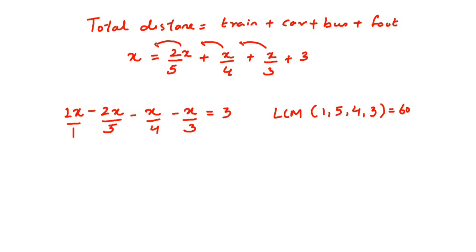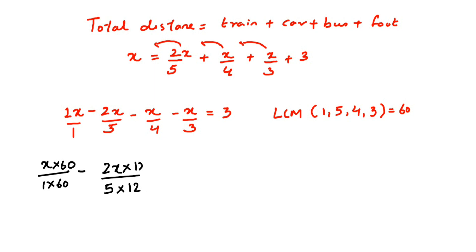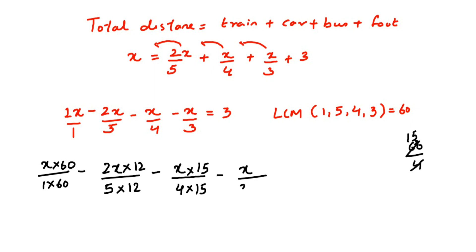For x by one, multiply numerator and denominator by 60. For two x by five, multiply by 12, since 5 × 12 = 60, giving 24x by 60. For x by four, multiply by 15 — since 60 ÷ 4 = 15 — giving 15x by 60. For x by three, multiply by 20 — since 60 ÷ 3 = 20 — giving 20x by 60. So the equation becomes: 60x by 60 minus 24x by 60 minus 15x by 60 minus 20x by 60 equals three.